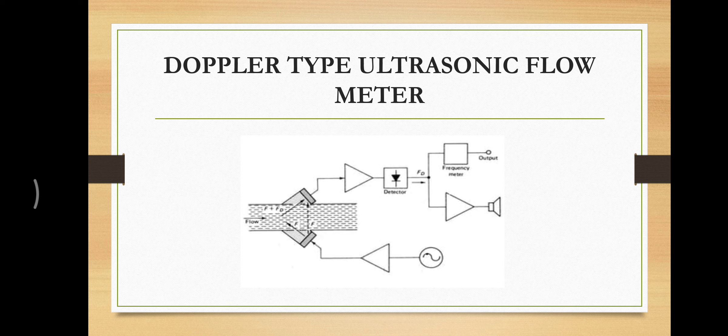Next one is a Doppler type ultrasonic flow meter. It consists of an oscillator which generates a frequency. This frequency is amplified by using amplifiers or drivers. This amplified frequency is sent to a transmitter and the frequency F is transmitted to receivers as F plus FD. It is sent to the amplifier and detected by the detectors.